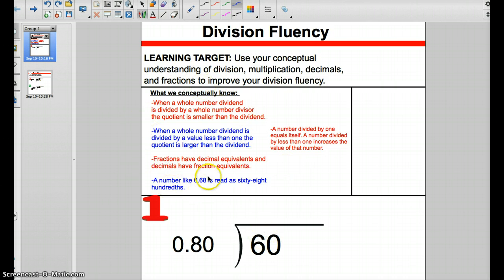You can look at these other things we conceptually know. For example, when a whole number dividend is divided by a whole number divisor, the quotient is smaller than the dividend. You can read the rest. But let's work on this problem.